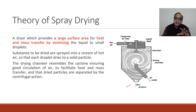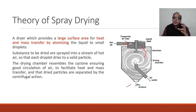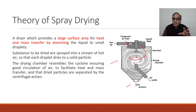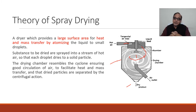Substances to be dried are sprayed into a stream of hot air so that each droplet dries to a solid particle. The feed moves in a counter-current way, getting maximum contact with the hot air, and after drying it can be collected through the outlet. The drying chamber resembles a cyclone, ensuring good circulation of air to facilitate heat and mass transfer, and the dried particles are separated by centrifugal action.